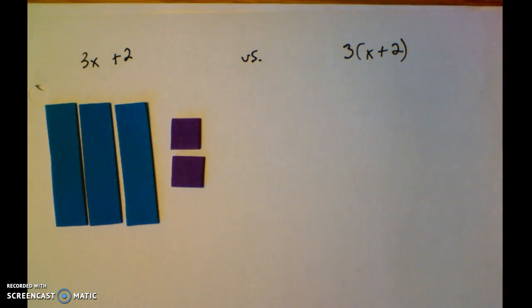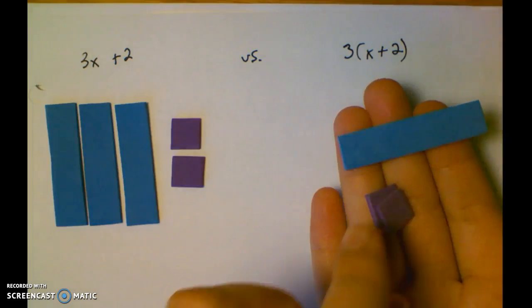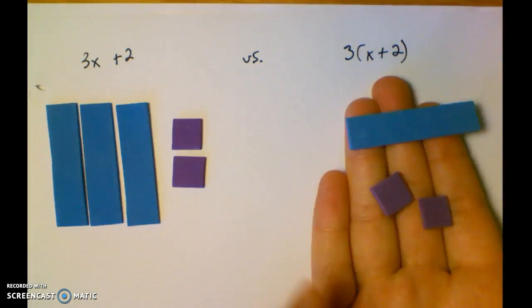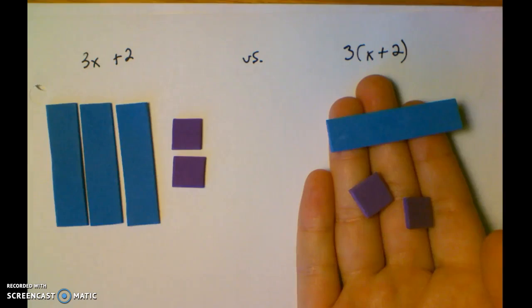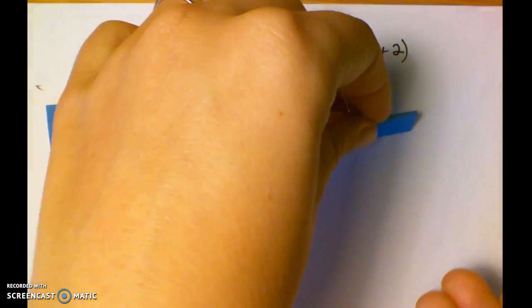That means that what it's telling me is it's telling me that I'm going to take a set of x plus 2 here inside the parentheses, and I'm going to put that down three times. So here's 3...